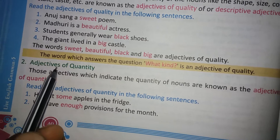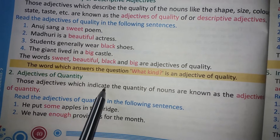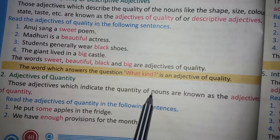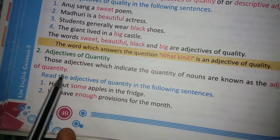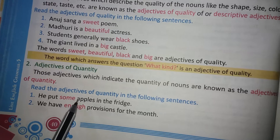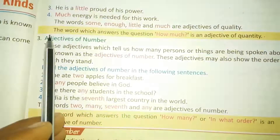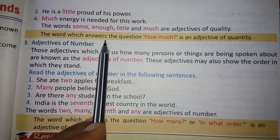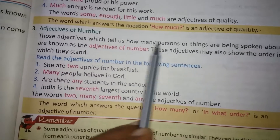Second: adjectives of quantity. Those adjectives which indicate the quantity of nouns are known as adjectives of quantity. For example: he puts some apples in the fridge. The word which answers the question 'how much' is an adjective of quantity.